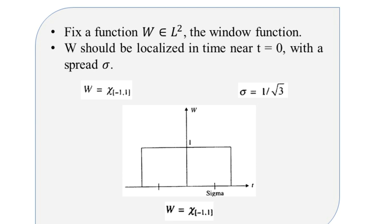Now, what are the possible window types? For a localized time parameter, we can apply the Fourier transform as seen in the previous video. The first alternative is where the window is described by a characteristic function, spanning from minus 1 to plus 1, where the standard deviation or spread is equal to 1 over root 3. This characteristic function has an amplitude level of 1, as shown in the graphical representation.